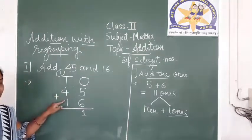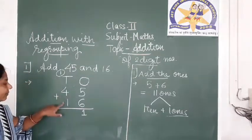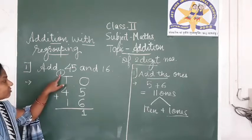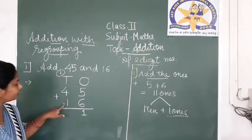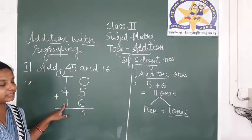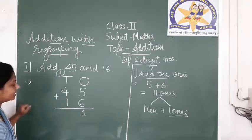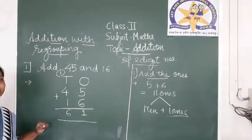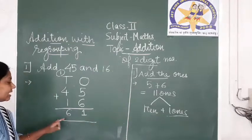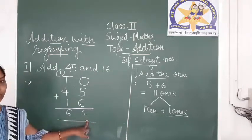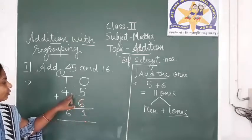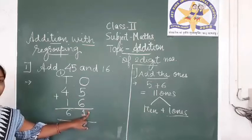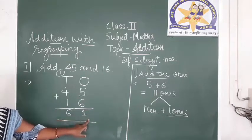Next, add the tens. 4 plus 1 is 5, but the 1 which we have carried must also be added. That means 5 plus 1 is 6. So the answer is 61. After adding 45 and 16, we got the answer 61.